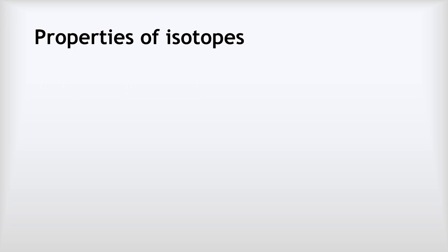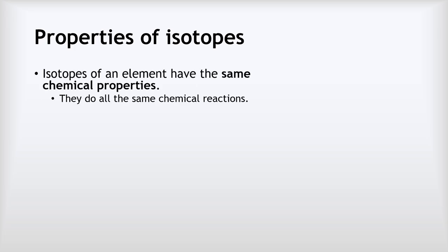So why does this matter? In terms of the chemical properties, all the isotopes of an element have the same chemical properties. What that means is they do the same chemical reactions. And the reason why is because the number of electrons they've got is the same, and chemistry is really just about the movement of electrons.